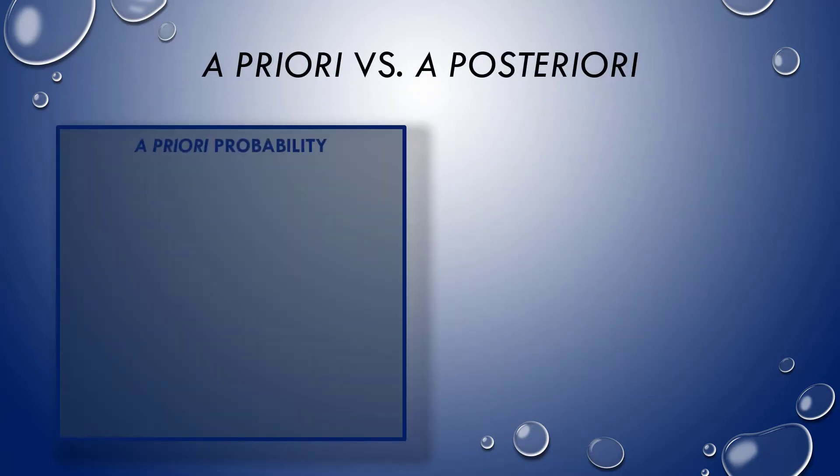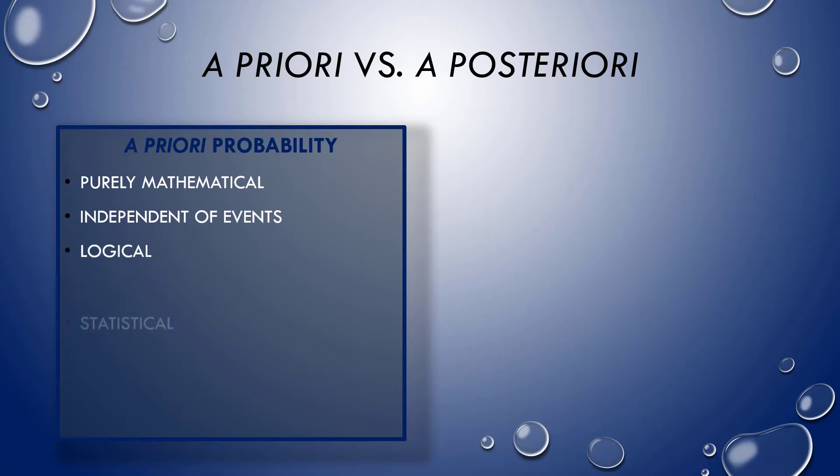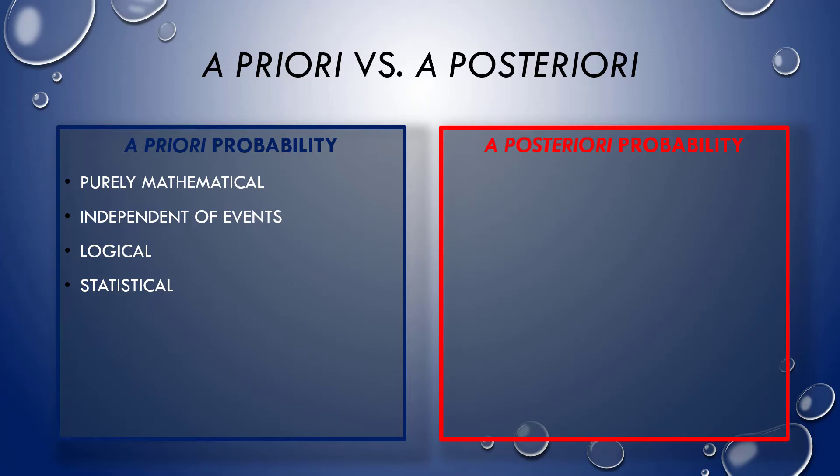A priori probability, from the Latin for from the former, or what comes beforehand, is purely mathematical. It's independent of events or experience, it's logical, and it's statistical. A posteriori, on the other hand, which is from the Latin for from the later, or what comes afterward, is empirical. It's mathematical. Calculations like measurements are based on empirical observation, and follow empirical observation. It's also dependent on events. It's scientific, and it's experimental.